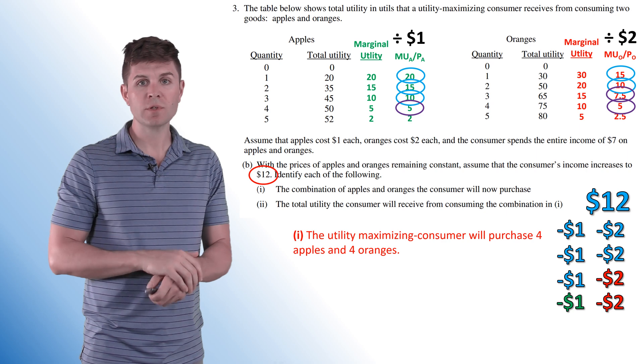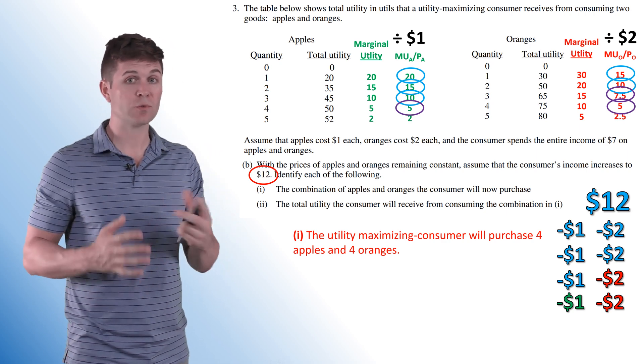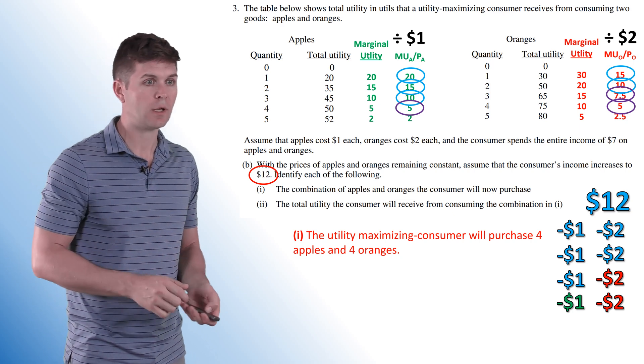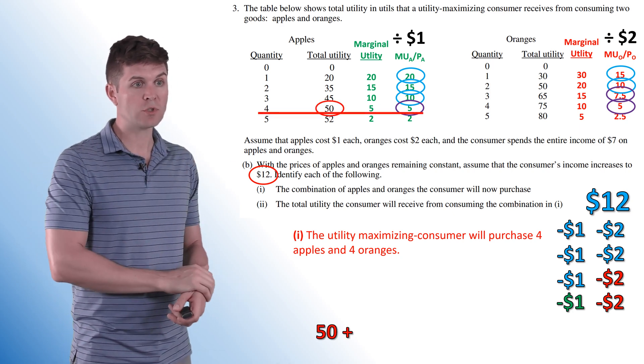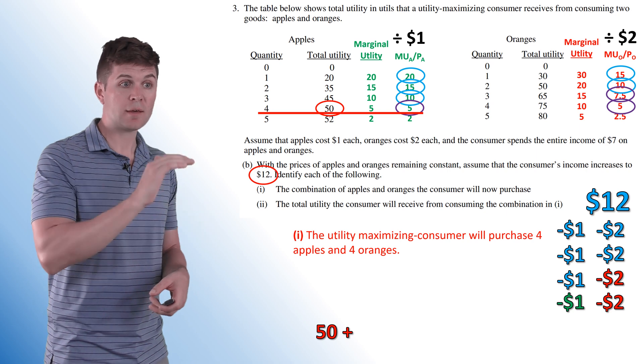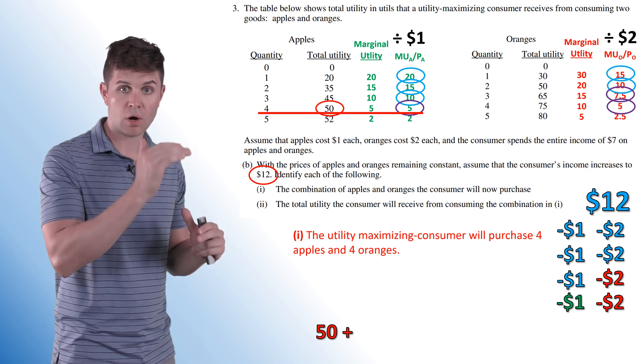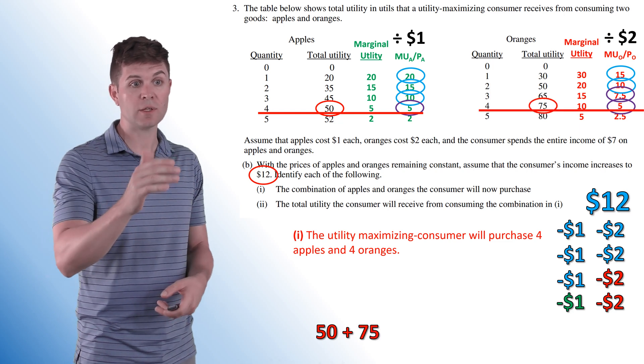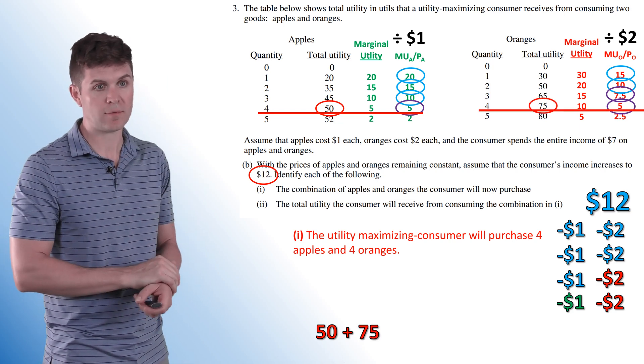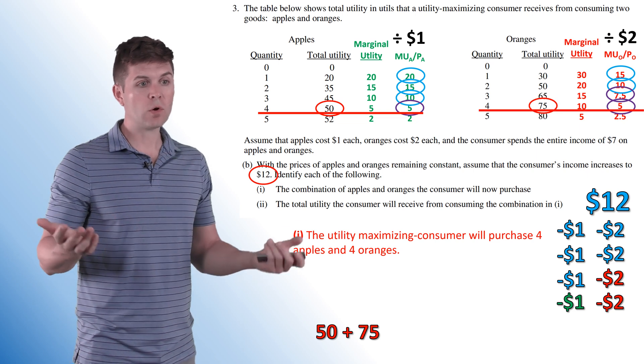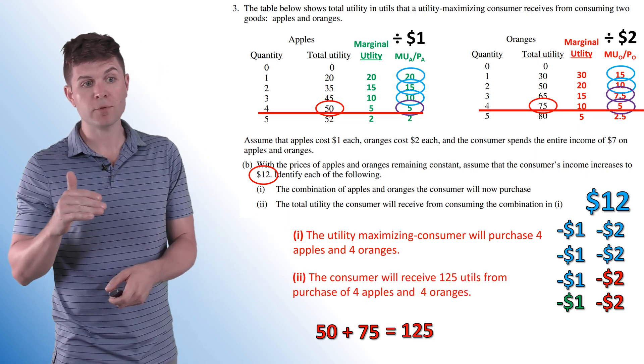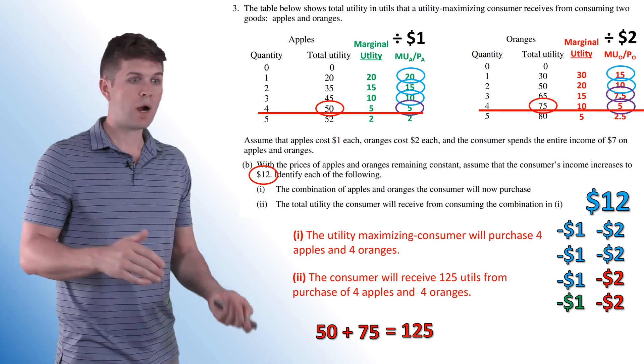Now, the total utility. Remember, we just bought four apples and four oranges, so it's fairly easy, especially with this table right here that gives us total utility. So we look up here. Our fourth apple that we bought gave us 50 units of total utility. All those apples gave us 50 units. So we add that to the total utility that we received from the four oranges that we just bought, 75. So total, consumer will receive 125 utils from the purchase of four apples and four oranges.